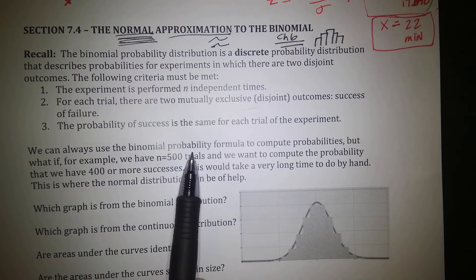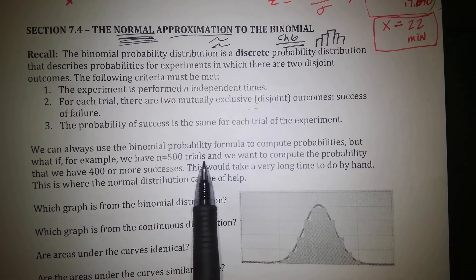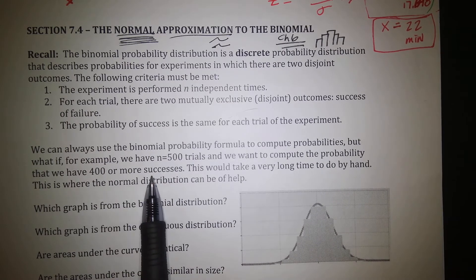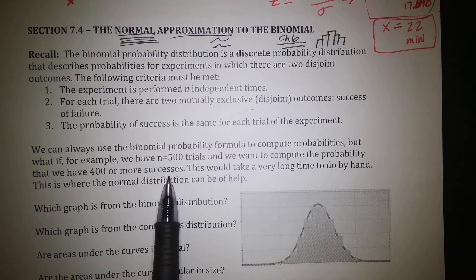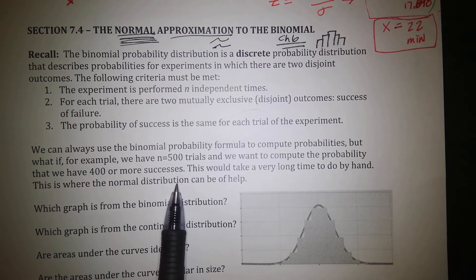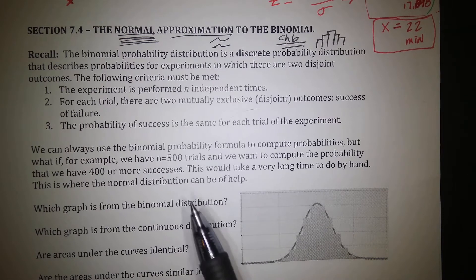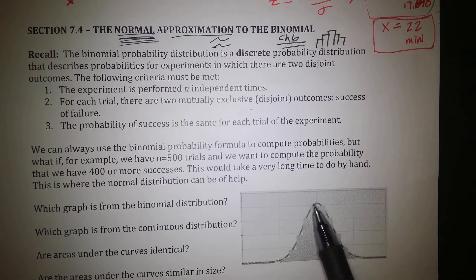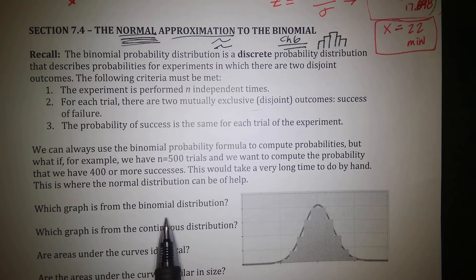Let's go back to the binomial distribution for a minute. We can use the binomial formula to compute probabilities. But what if we have 500 trials and want the probability of 400 or more successes? That would mean calculating for 400, 401, 402, all the way up to 500, and adding them all together. This would take a very long time by hand. This is where the normal distribution can actually help — if we connect all of those bars together with a curve, we can get an approximation of the area.